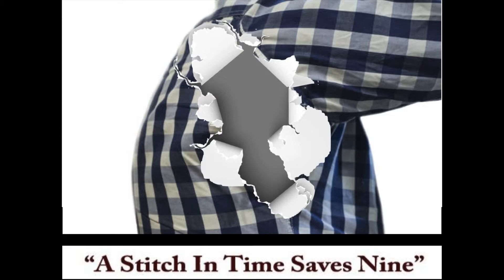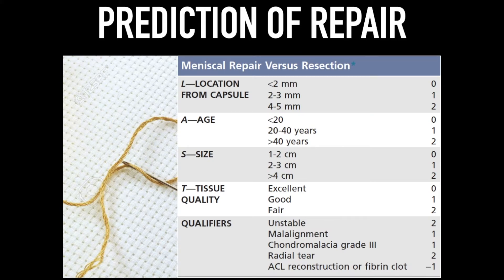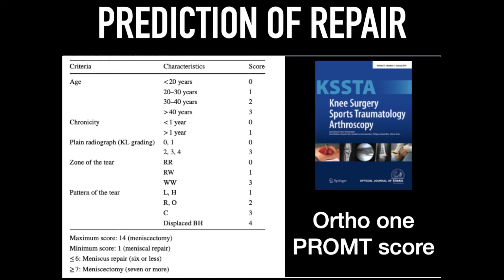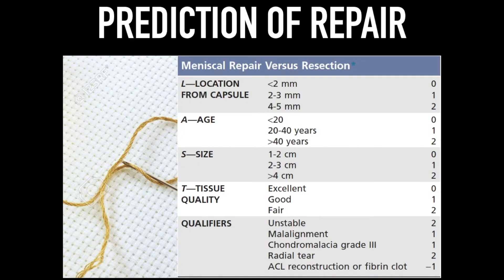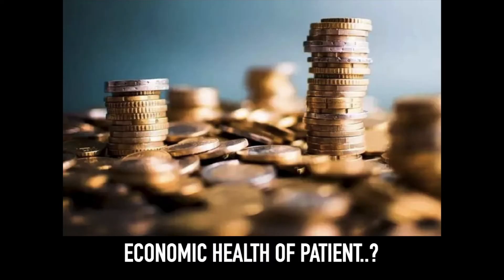There are multiple predictive scoring systems for meniscal repair discussed in the literature. The last qualifiers described in Campbell's Orthopaedics — describing location, size, tissue, and other qualifiers — is a very useful one. There is also a fourth scoring system where plain X-ray is taken into consideration. However, whatever the value of these predictive scoring systems, the final decision is always made during arthroscopy after carefully probing the meniscal tear.